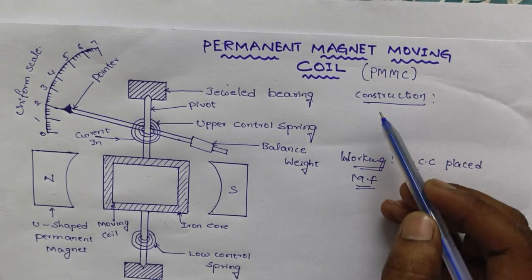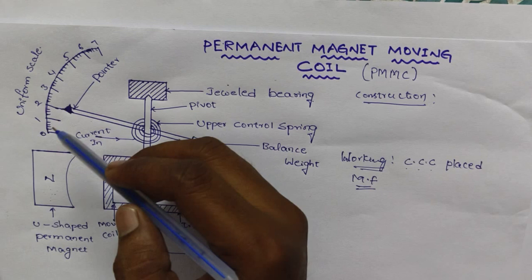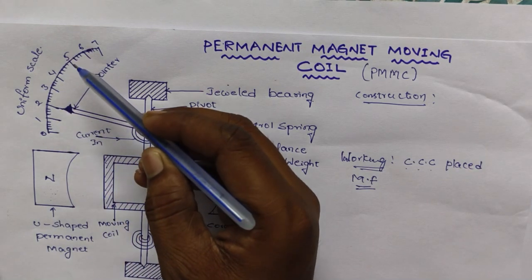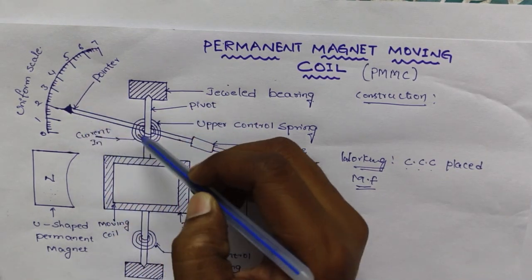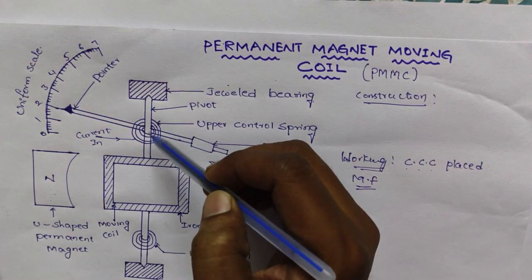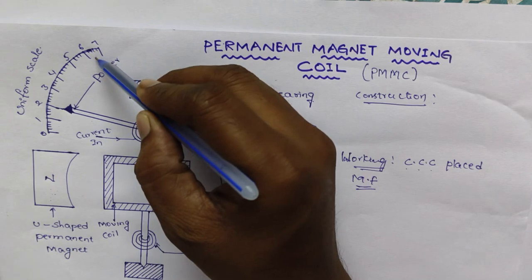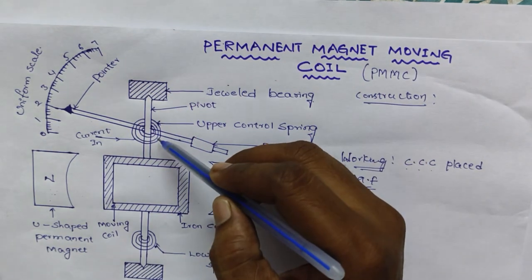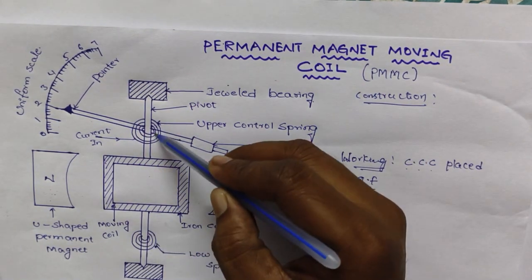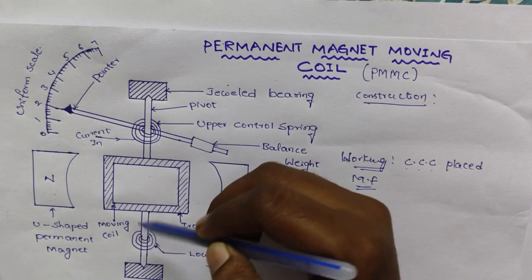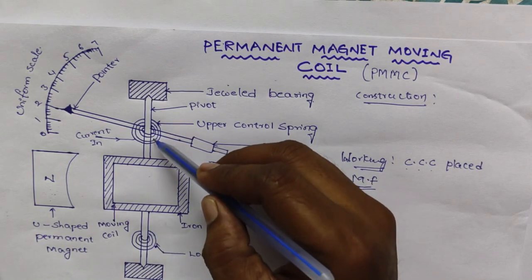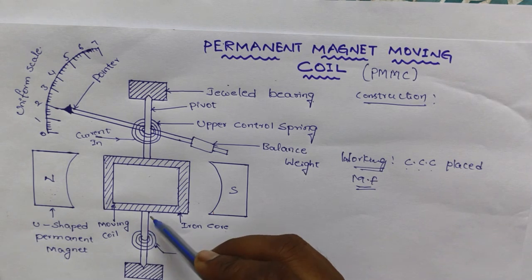Let's move to the first construction. Here calibrated scale, pointer, this pointer attached to the spindle and which moves over a calibrated scale. These two are head springs, upper branch, are mounted one above and other below to the coil.